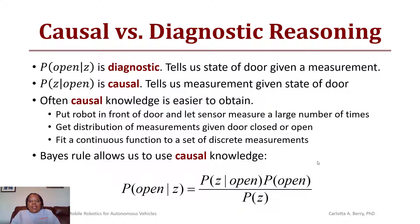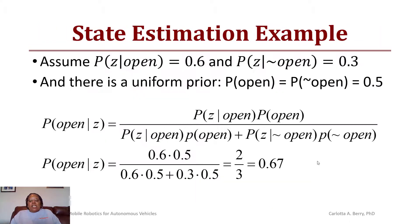If you don't know anything else about the probability of the door being open, you may want to make it 50-50 that the door is open because people walk in and out of a door all day. Here's a state estimation example with some quantities: the probability of a certain sensor measurement given that the door is open is 0.6, and the probability of that sensor measurement given that the door is not open is 0.3.